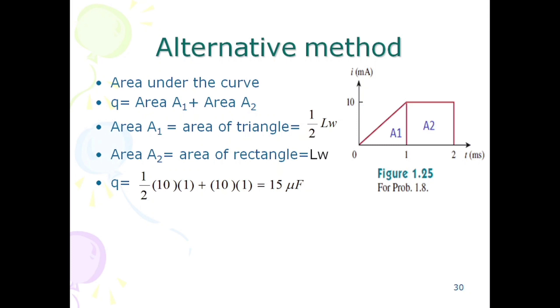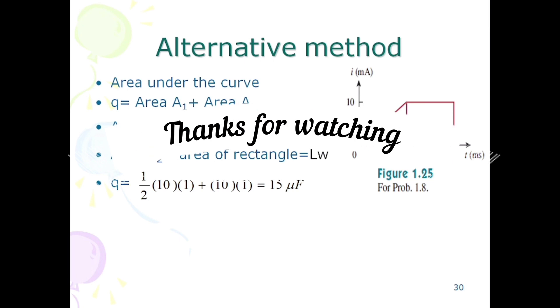Now first, area of the triangle is equal to half into length into width, and the second area is equal to length into width. The length is equal to 1 and the width is equal to 10. Half of 10 into 1 plus area of rectangle, which is the difference of 2 minus 1, that is equal to 1, and the height is 10. The answer is 15 micro farad. That's all, thank you.